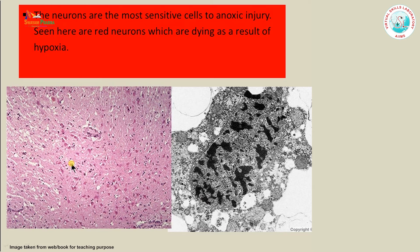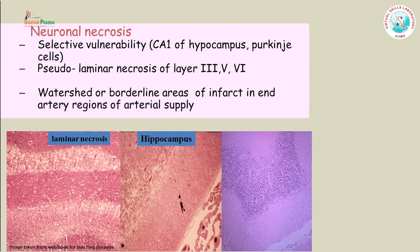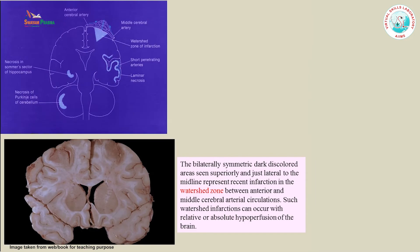This H&E stain section shows what is called red neurons, due to ischemia. There can also be neuronal loss. The zones most vulnerable to necrosis are layers 3, 5, and 6 in the cerebral hemisphere, known as laminar necrosis. In the hippocampus, the CA1 sector is most prone to injury, and in the cerebellum, the Purkinje cells are the most vulnerable. This image shows a bilateral infarct affecting the watershed zones on both sides due to global ischemia.